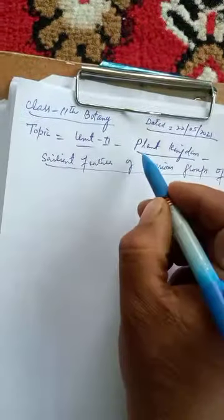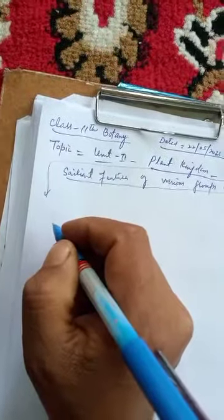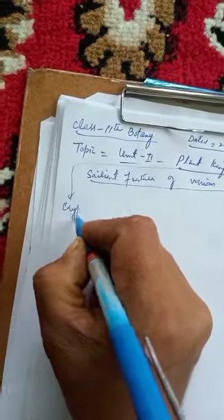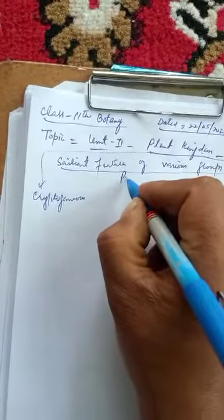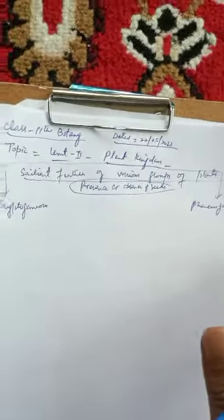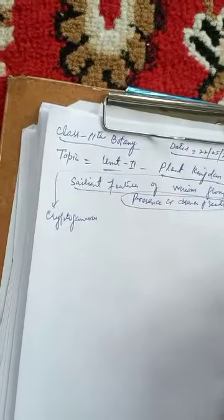Traditionally, we classify Plant Kingdom into two sub-kingdoms: Cryptogamae and Phanerogamae. The criteria for this classification is the presence or absence of seeds. On the basis of presence or absence of seeds, Plant Kingdom has been divided into two sub-kingdoms: Cryptogamae and Phanerogamae.